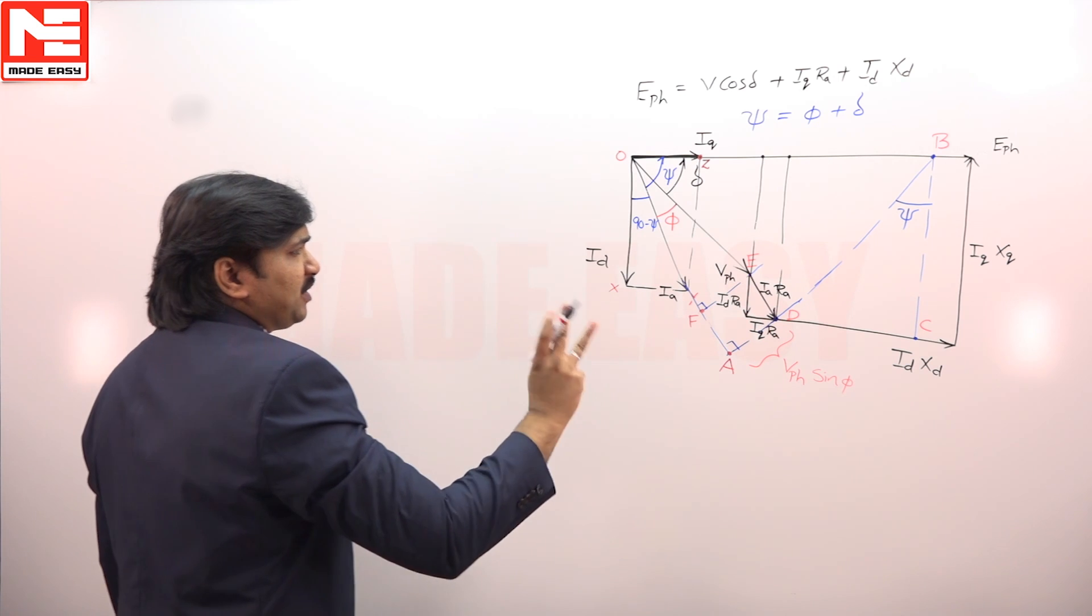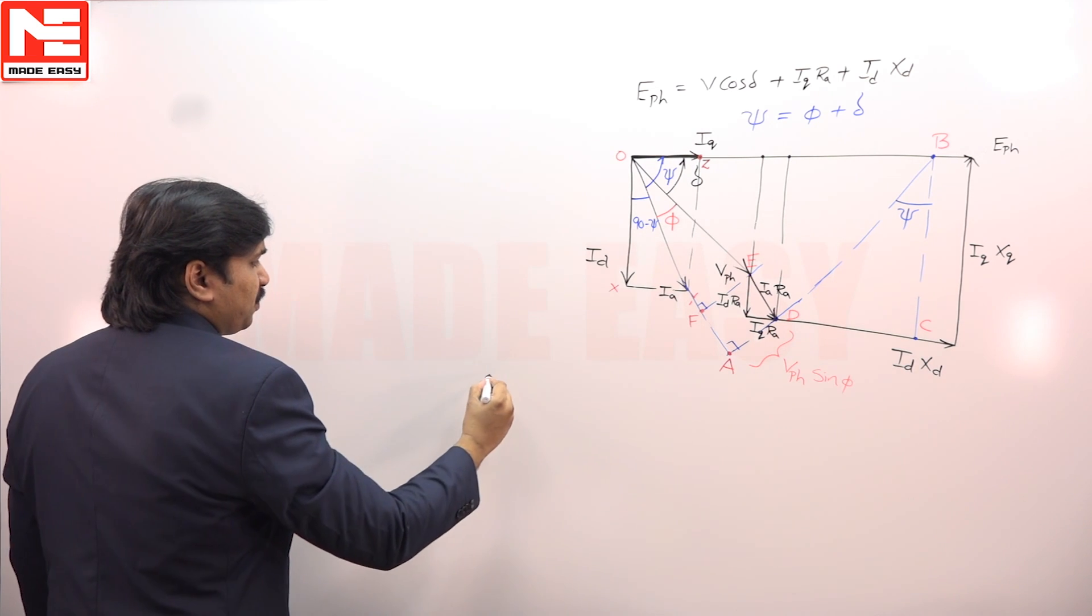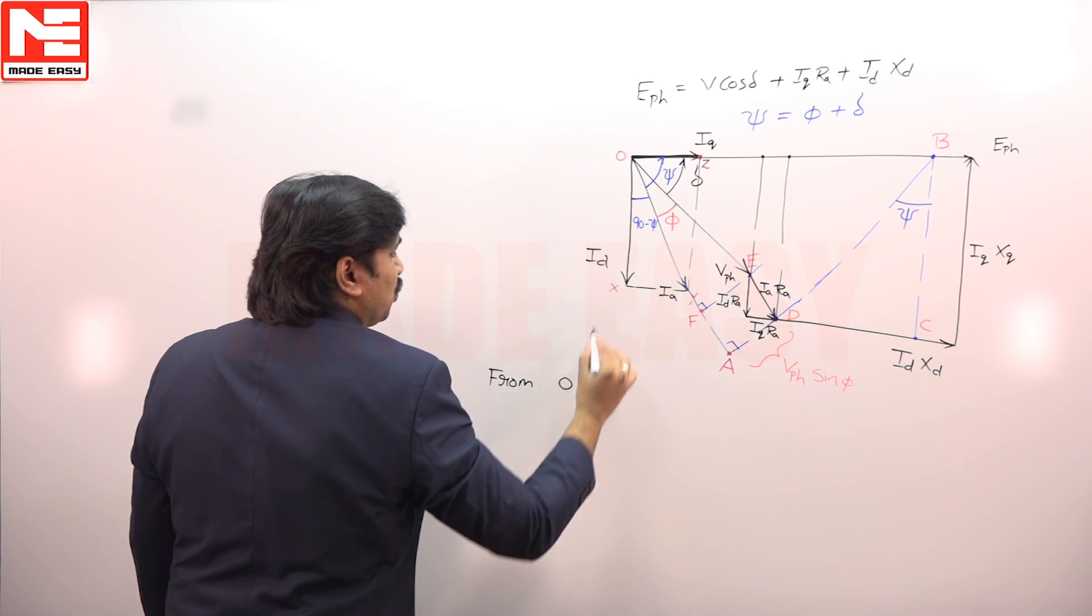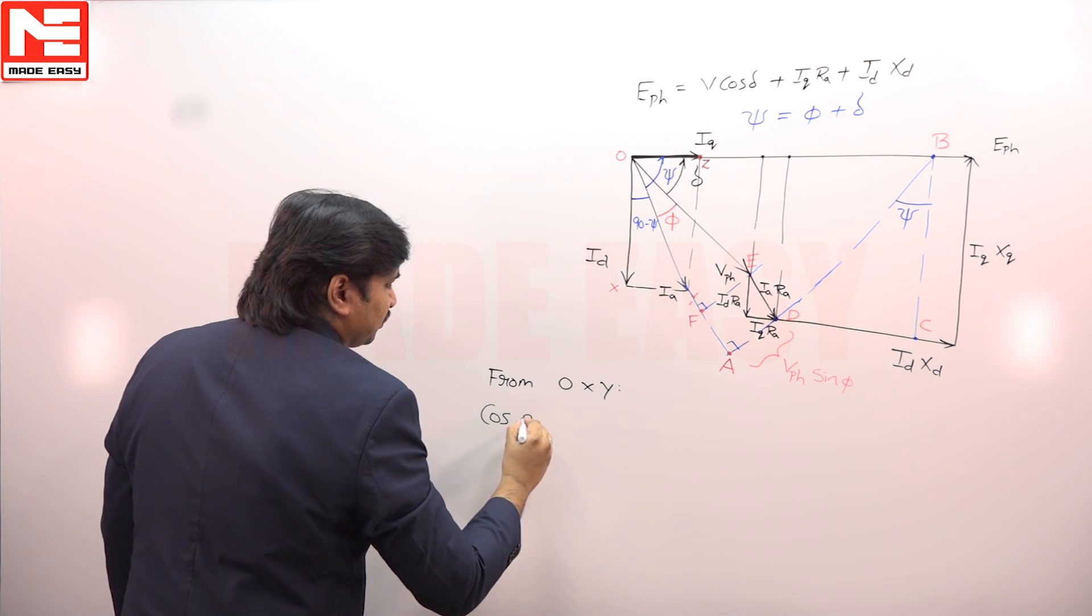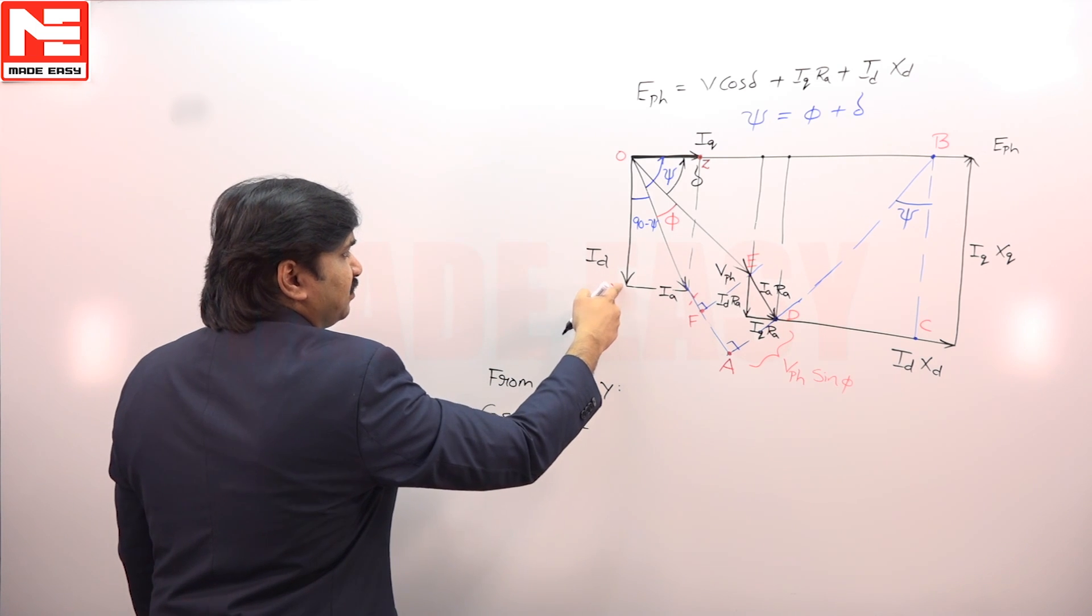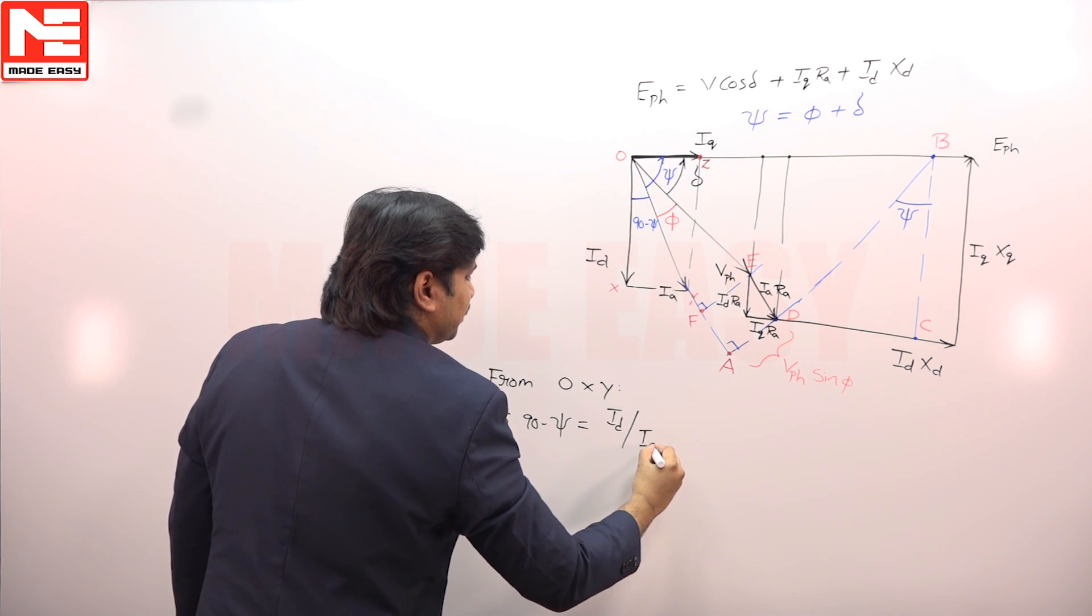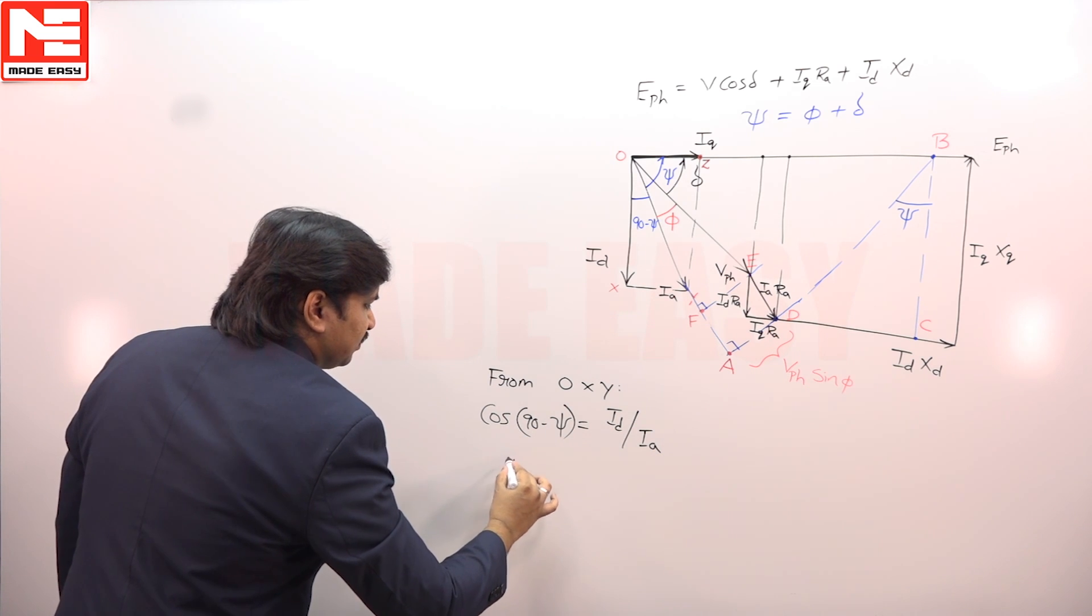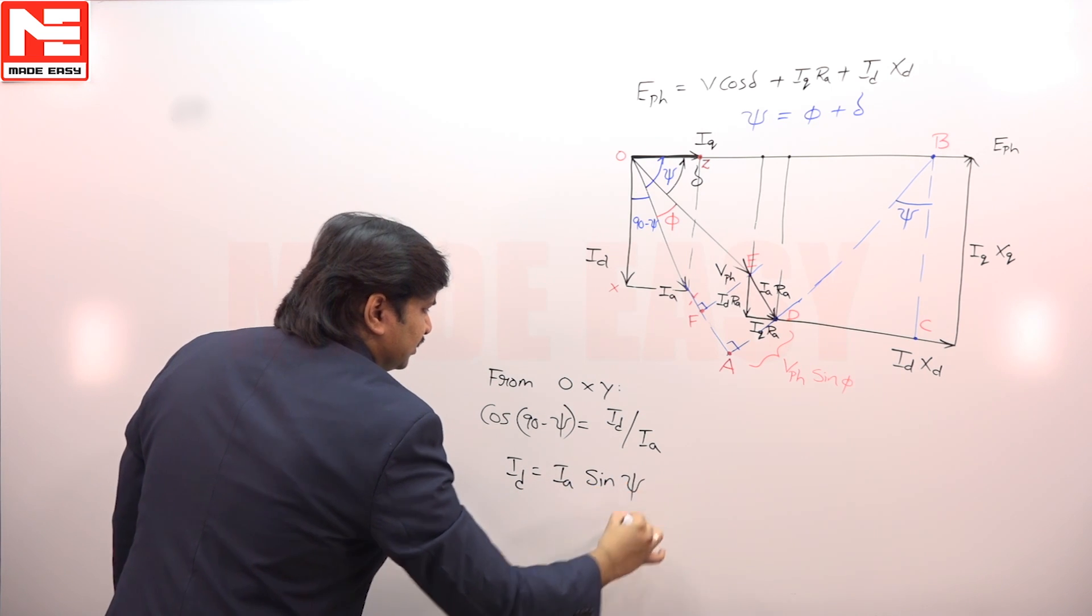From this, there are two triangles we have to take care now. First, triangle one from O, X, Y. Cos 90 minus psi is equal to ID by IA. Therefore, ID is equal to IA sin psi.